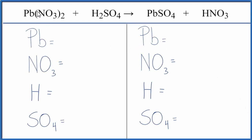In this video, we'll balance the equation Pb(NO₃)₂ plus H₂SO₄. That's lead two nitrate plus sulfuric acid.